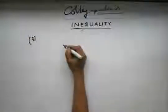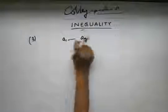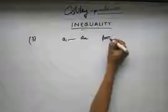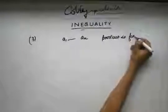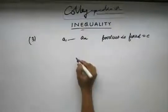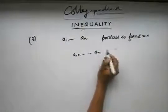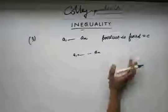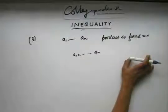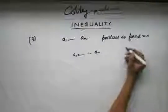The third question: I give you n positive real numbers a₁ through aₙ, and their product is a fixed number equal to c. I need to find the minimum value of a certain sum. If you have a question related to a fixed product and need the minimum value of a sum, the only thing you can think of at first sight is the AM-GM inequality. So try applying that inequality and find the answer.